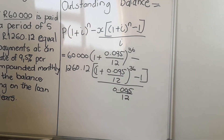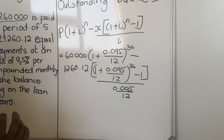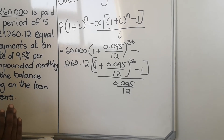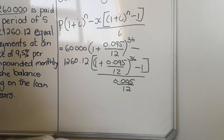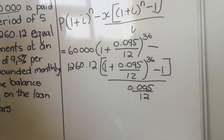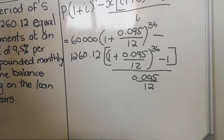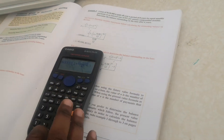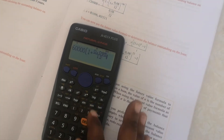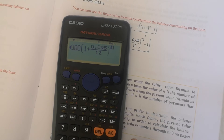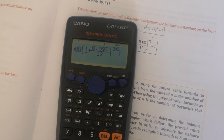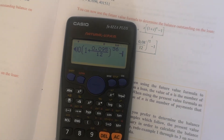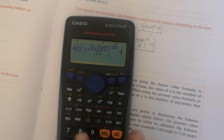When you get to this point, take your calculator and punch everything in. You start by entering: 60,000, then open bracket, one plus a fraction — 0.095 over 12 — close bracket, to the power of 36. Then go out of that and press minus, then begin entering the future value formula part.